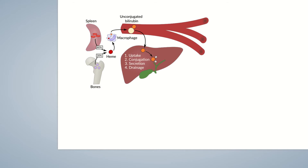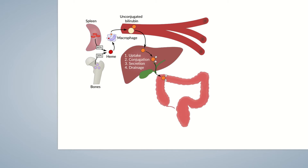The conjugated bilirubin is excreted into the gut from the liver through bile. The colonic bacteria deconjugate and metabolize the bilirubin into urobilinogen. Urobilinogen is a colorless intermediate product, and 80% of the urobilinogen remains in the colon. It can be further converted by bacteria initially into stercobilinogen and finally into stercobilin, which gives feces its characteristic brown color.